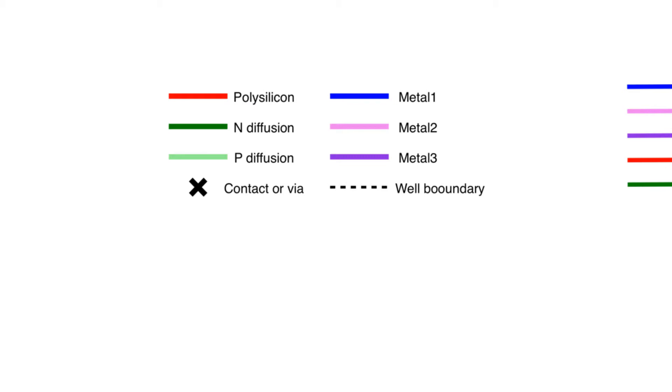We will use black x's to indicate contacts or vias, and we're not going to make a distinction in this case, but in some cases some standards for drawing stick diagrams will, for example, use black dots to indicate vias and black x's to indicate contacts. I will use a dotted line to indicate a boundary between the well and the substrate, so that we have to draw all PMOS transistors on one side of this dotted line and all NMOS transistors on the other side. We will use different shades of blue and purple to indicate different levels of metal wires.